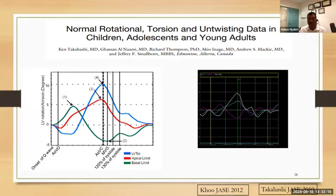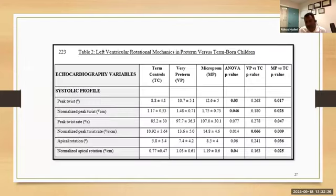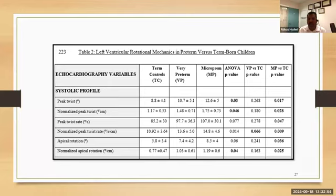We chose to use our own published methodology. Using this methodology applied to our patients, every parameter was abnormal when comparing micro-prems with term. For example, term was twisting 8 degrees while micro-prems were twisting 12 degrees — 50% more. Terms twisted at about 85 degrees per second, whereas micro-prems twisted at 107 degrees per second. They're twisting not only higher but faster — basically working harder to maintain cardiac output while showing a normal conventional echo.